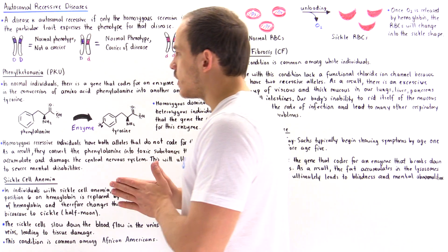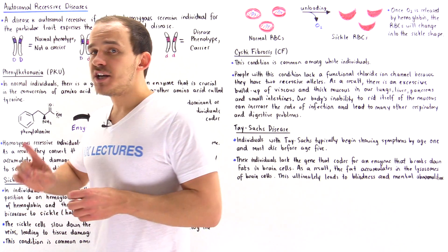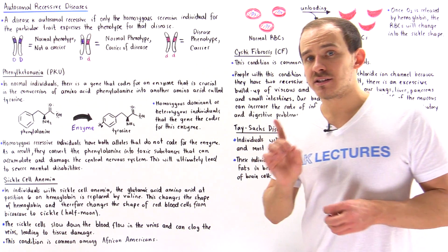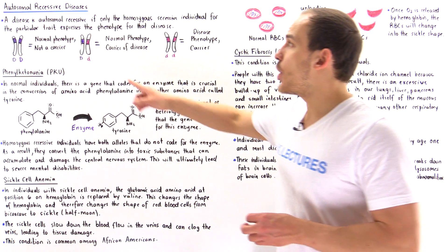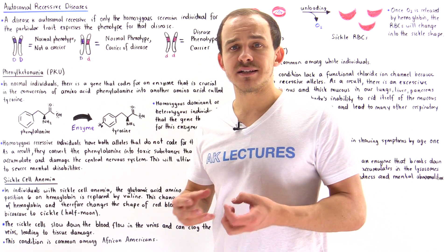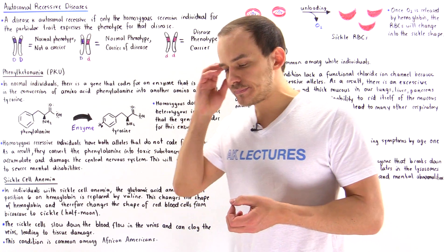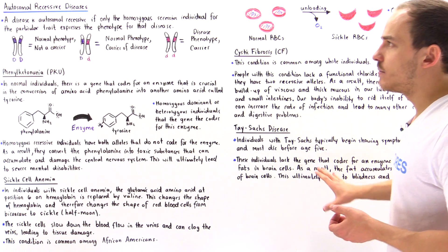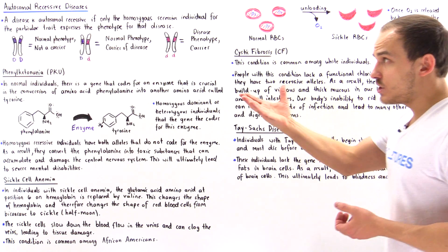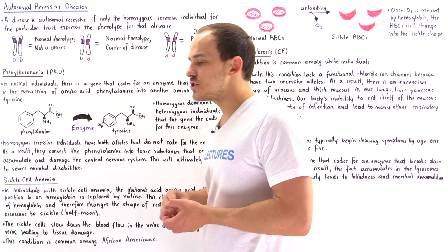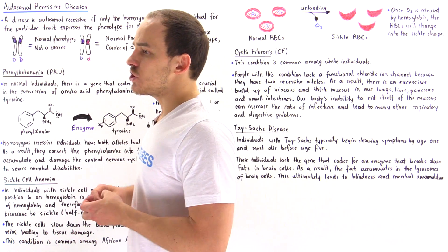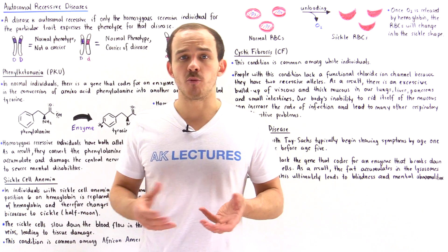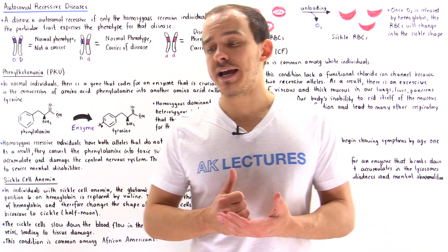So in this lecture, we're going to focus on a specific type of genetic disease — a genetic disorder known as autosomal recessive disease. Before we examine four specific examples of human autosomal recessive diseases, let's recall and define what we mean by an autosomal recessive disease in the first place.